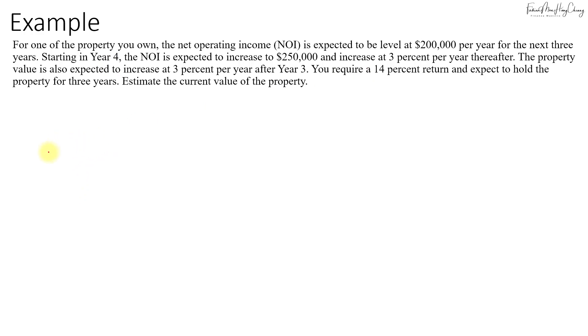If you draw the timeline here, for the first three years—time zero, one, two, and three—the rental will be $200,000. Then from year four onwards, the rental will be $250,000 and then grow at a rate of 3% every year after that. This includes year six as well.